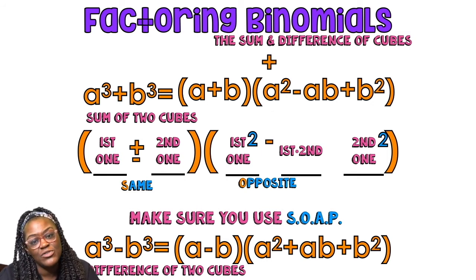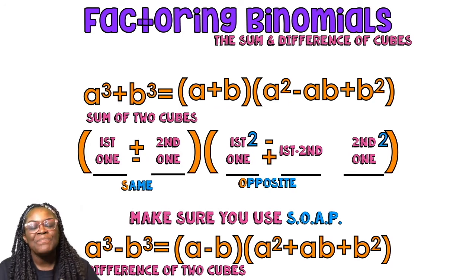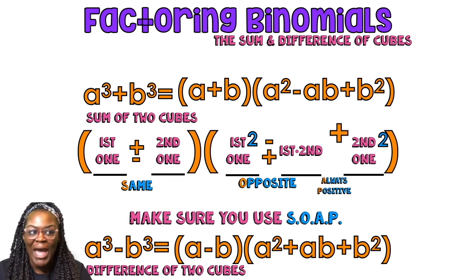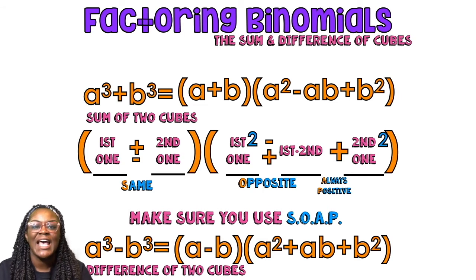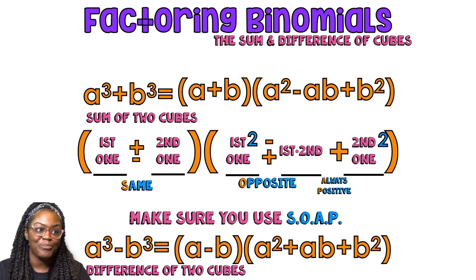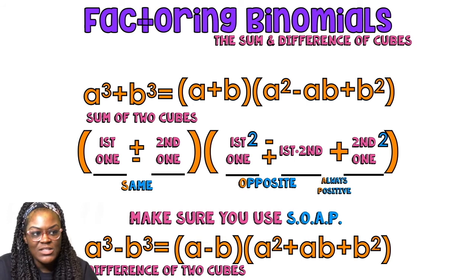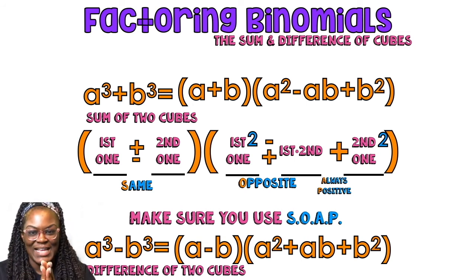If it was the difference of two cubes, then you would put a plus there. The A and the P in soap stands for always positive. No matter what, if you started with the sum of two cubes or the difference of two cubes, that last sign is always going to be positive. So that's it — first one, second one, first one squared. First one times the second one, the second one squared. Use some soap! Same sign, opposite sign, always positive sign.